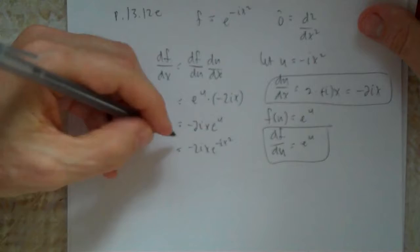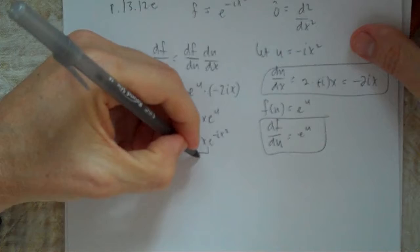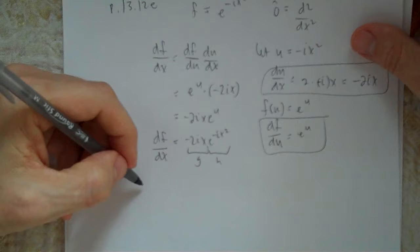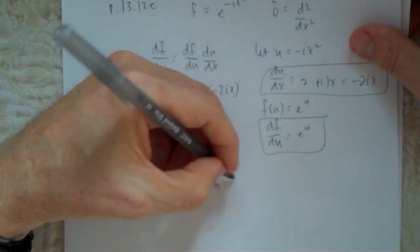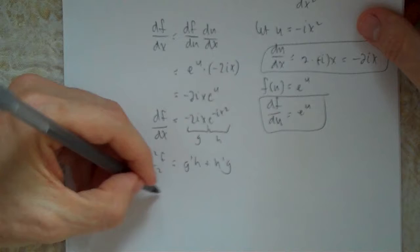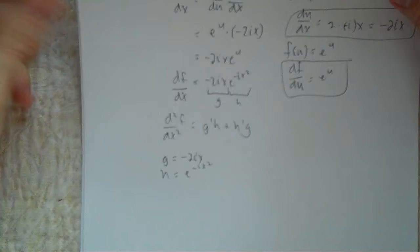Now we have two functions of x multiplied together, so we use the product rule for the second derivative. I'll call g = minus 2ix and h = e to the minus ix². Then d²f/dx² = g'h + h'g.